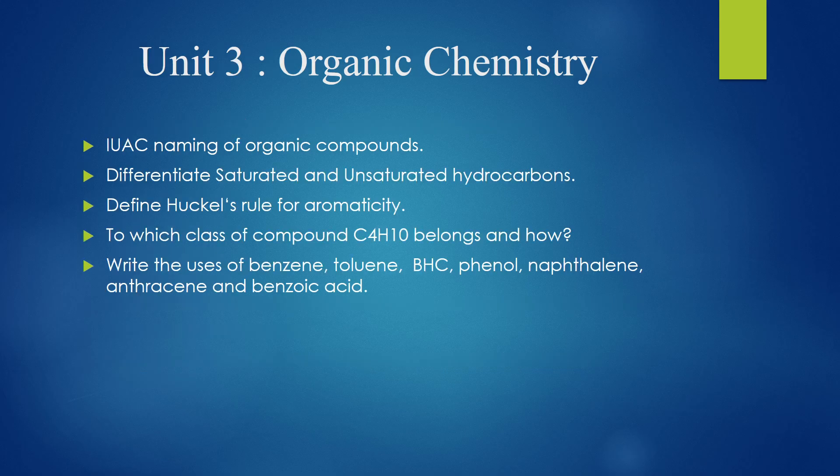From Unit 3, that is organic chemistry, we can have questions like IUPAC naming of organic compounds — it's an important question and you can expect five to ten questions each carrying one mark from this part. Next, differentiate saturated and unsaturated hydrocarbons. Define Hückel's rule of aromaticity. We can also expect short answer type questions like: to which class of compounds does C₄H₁₀ belong and how? Next, write the uses of benzene, toluene, BHC, phenol, naphthalene, anthracene, and benzoic acid — you have to write minimum two uses of these organic compounds.